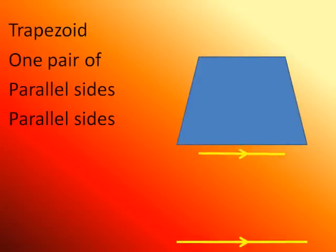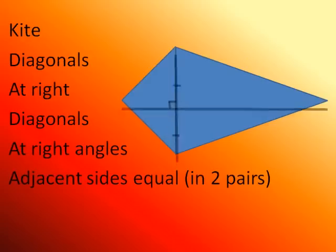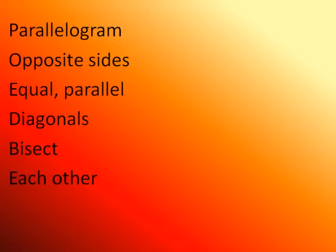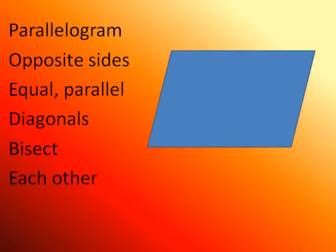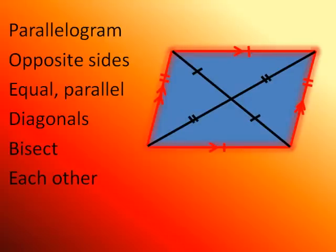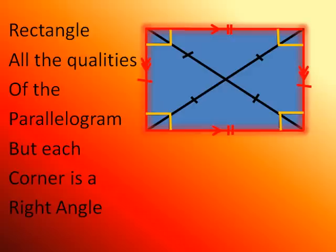Trapezoid — one pair of parallel sides. Rectangle — all the qualities of a parallelogram, but each corner is a right angle.